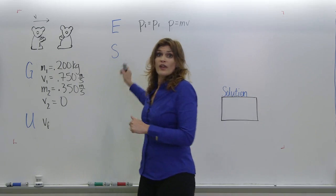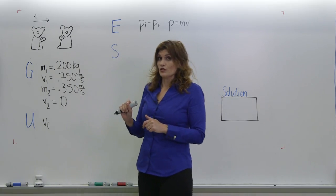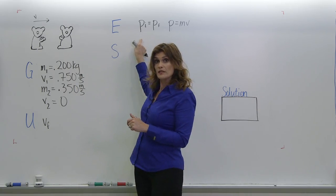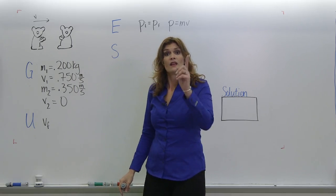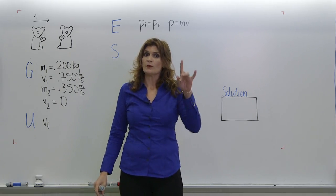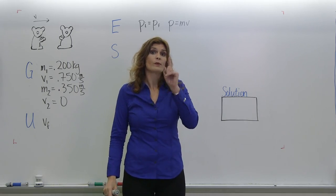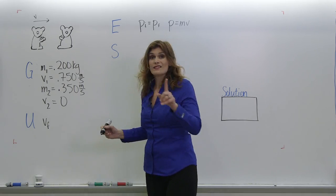So we know that momentum in this case is conserved, so initial momentum is equal to final momentum, and we know our equation for momentum. The key is that all of the momentum in this case comes from the first koala bear, and this is what it looks like.